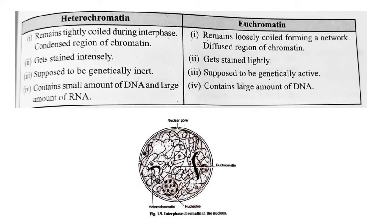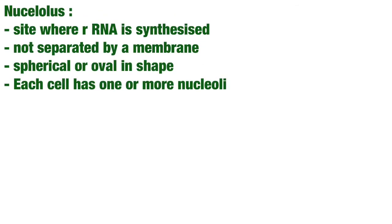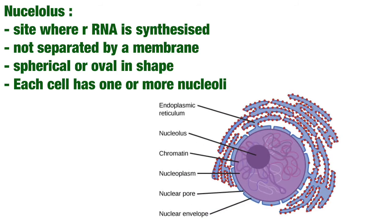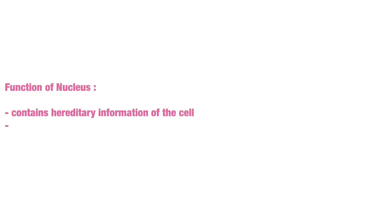The nucleolus is a site within the nucleus where ribosomal RNA is synthesized. It is not separated from the rest of the nucleoplasm by a membrane.